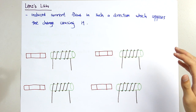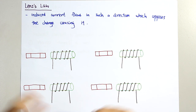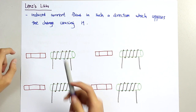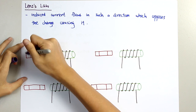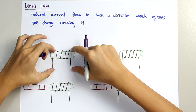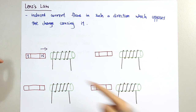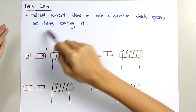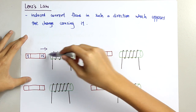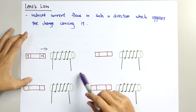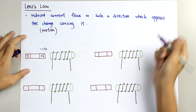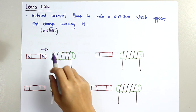It's not really easy to understand from the definition alone, so I'll explain it using diagrams and examples. For the first example, we have a solenoid coiled with wires and a magnet with a North Pole and South Pole. We move the magnet towards the solenoid, so the change — which is also the motion — is in the direction toward the solenoid. Based on Lenz's law, the induced current flows in a direction which opposes the change or motion causing it.